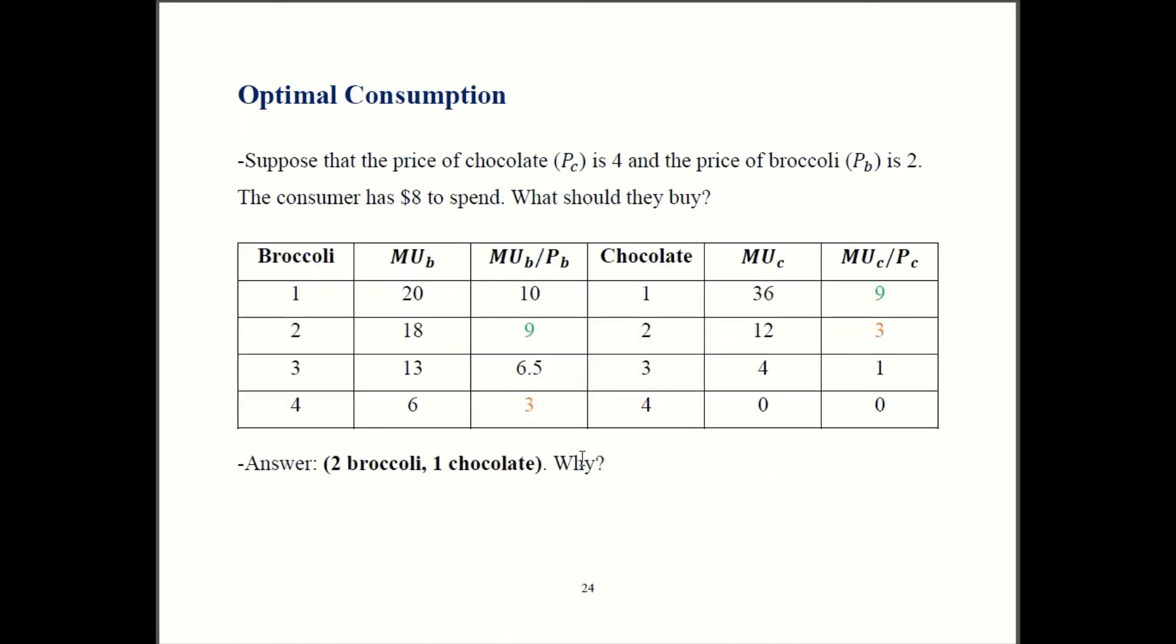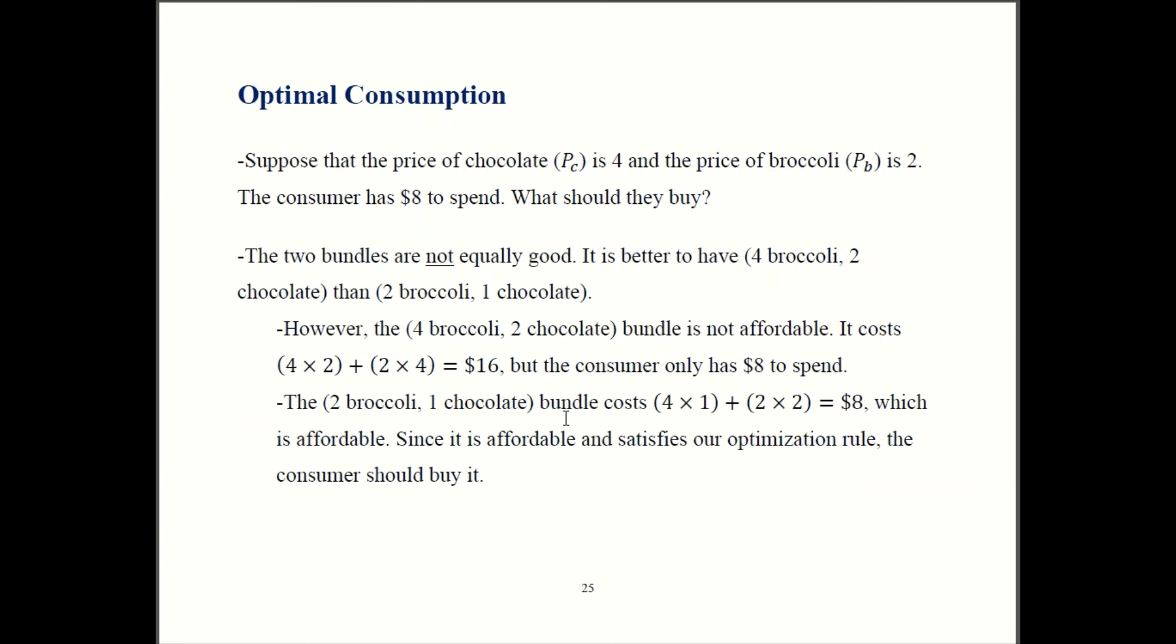Now the other combination there, where you had four broccoli and two chocolate, that is too expensive for this consumer. Of course they'd like to consume more if they could, but with only eight dollars, that's not an option. So broccoli is $2 each, so you buy four broccoli, that's going to cost you $8 just on broccoli alone. If you're also buying two chocolate on top of that, and chocolate costs $4, that's another $8. So buying four broccoli and two chocolate is going to cost you $16, and that is unaffordable to this consumer.